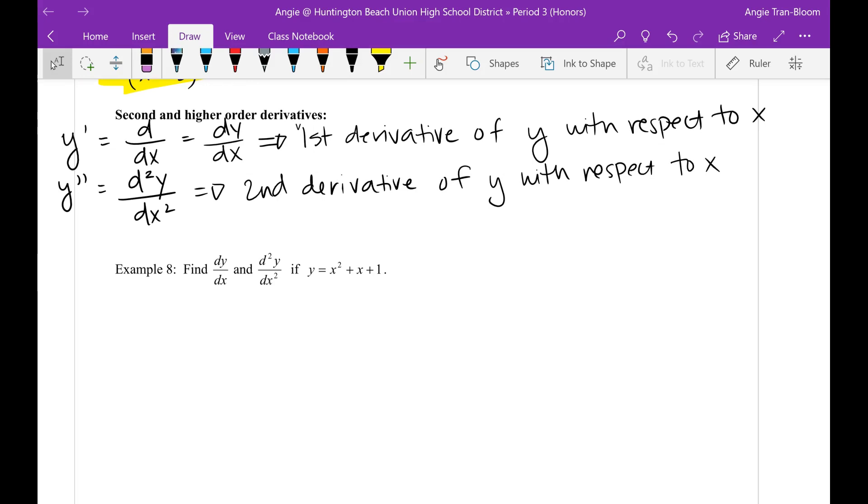So here's example 8. Find dy over dx, which is the first derivative, and then d square y over dx square, that's the second derivative. So you can start finding the first derivative normally, the first derivative using the power rule.